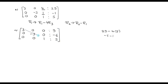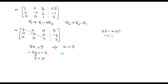Now we equate the elements: 3x equals 9, minus 3y equals minus 6, and z equals 5. Solving these equations: x equals 9 divided by 3, which is 3; the minus signs cancel so y equals 2; and z equals 5. This is the solution of the system of equations using the Gauss-Jordan method. Thank you for watching.